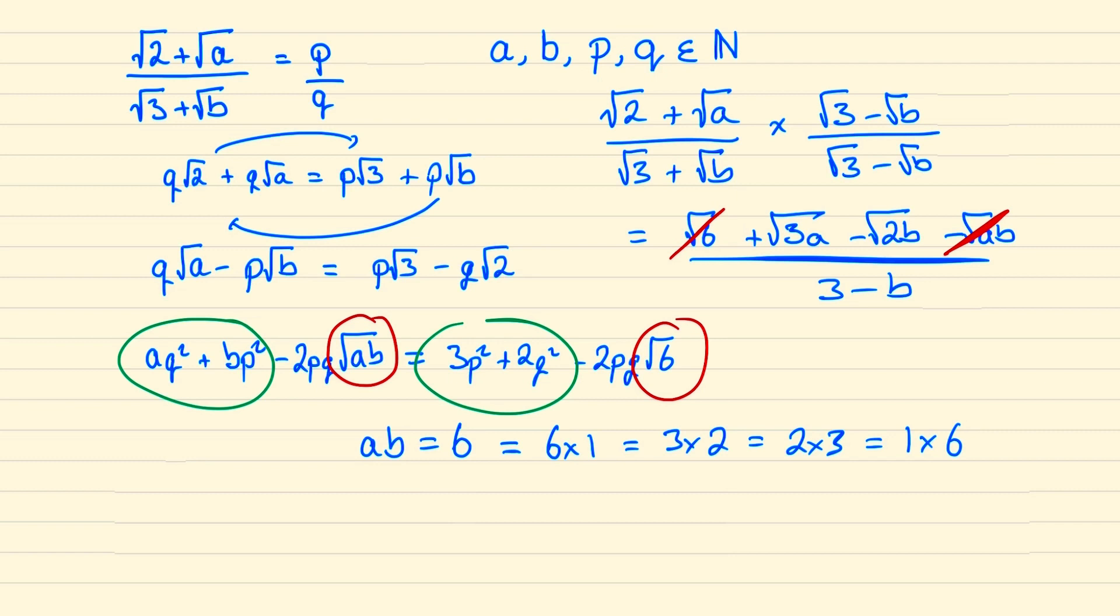And given that b is a natural number 3 take away b will always be an integer. And so what we're looking for is when root 3a minus root 2b is also an integer.